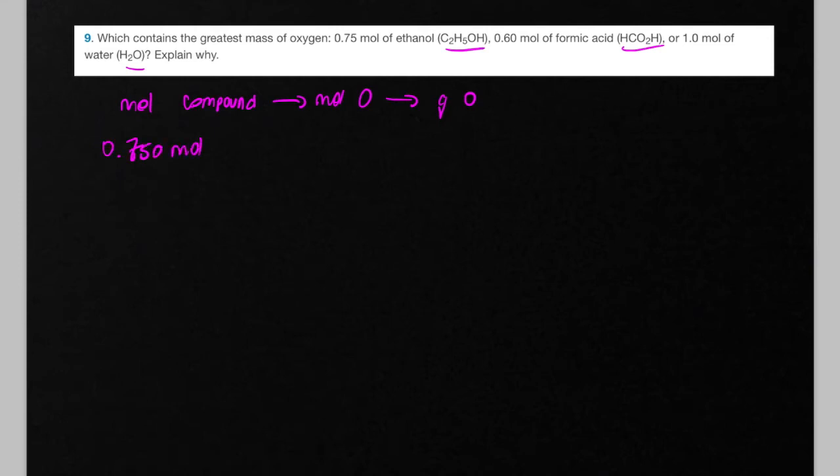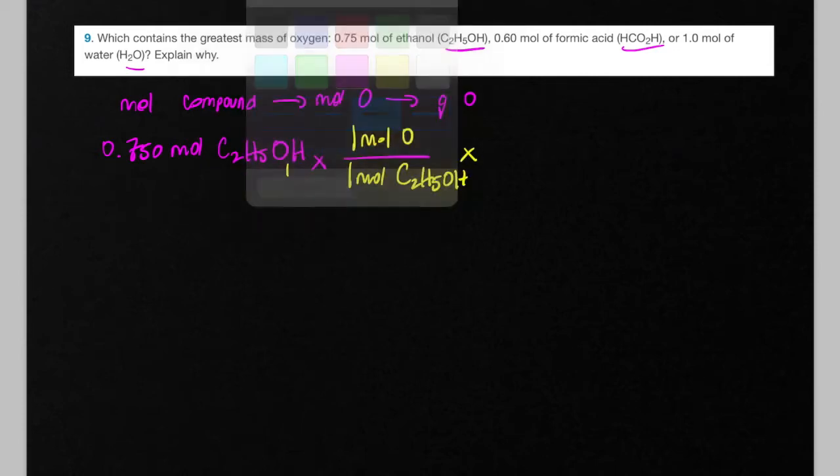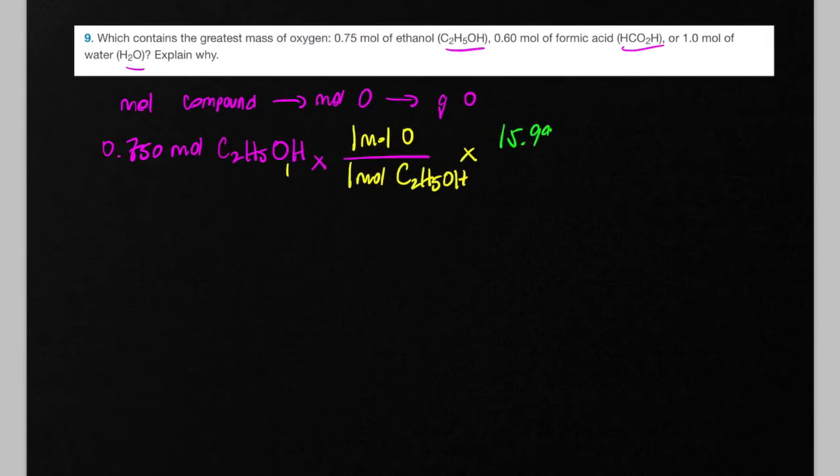So 0.750 moles of ethanol contains, because the subscript which isn't shown for the oxygen is assumed to be 1, it contains 1 mole of oxygen per 1 mole of ethanol. And we know that each oxygen has a molar mass, according to our periodic table, of 15.999.